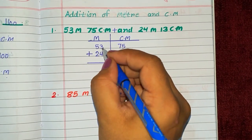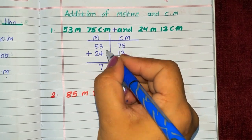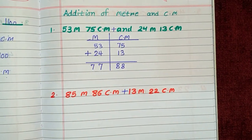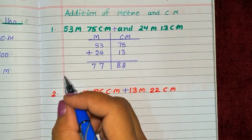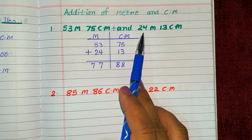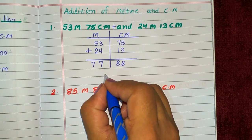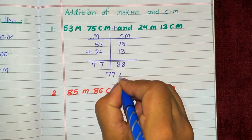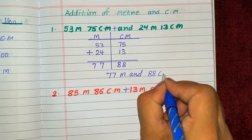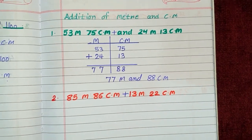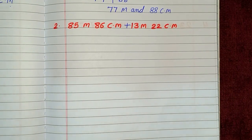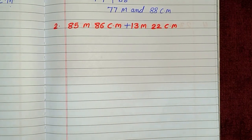3 plus 4 is 7, and 5 plus 2 is 7. So the sum of 53 meter 75 centimeter and 24 meter 13 centimeter is 77 meter and 88 centimeter. Now come to the next question: 85 meter and 86 centimeter.